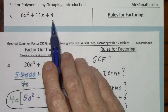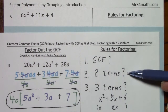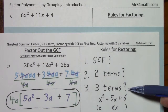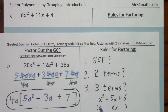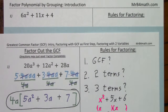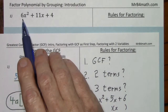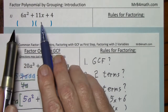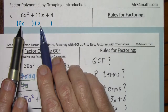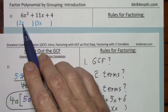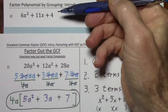In this case, there is no GCF other than one. So then you pay attention to the total number of terms. Do you have two terms? No. Do you have three terms? Yes. I've already covered what to do when the leading coefficient is one — you give yourself two sets of parentheses and put x and x. But when the leading coefficient is other than one, I don't know if the first position is 6x and 1x, or 2x and 3x. Since it's a little more complicated, we have to go through a bit more work to factor this polynomial.